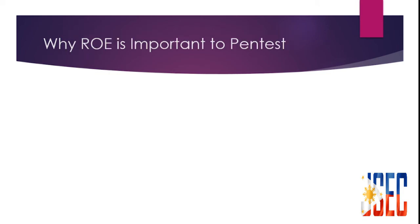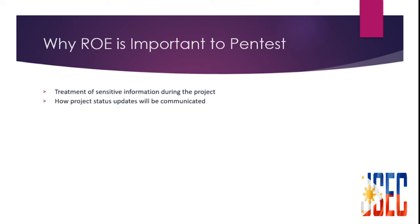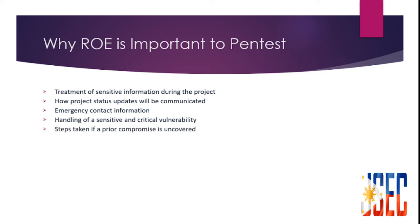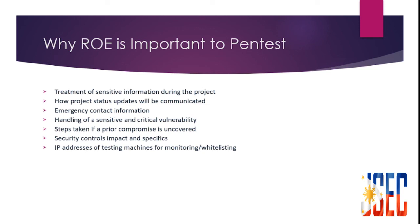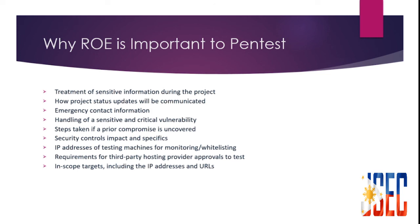Why are rules of engagement important to penetration tests? The ROE document and its rules are crucial, as they provide the do's and don'ts of testing. They contain important project-specific details such as special testing parameters, requested rules the testing team should abide by, and disclosures about testing that can help protect the client — such as treatment of sensitive information during the project, how project status updates will be communicated, emergency contact information, handling of sensitive and critical vulnerabilities, steps to take if a prior compromise is uncovered, security controls impact and specifics, and IP addresses of testing machines for monitoring and whitelisting.